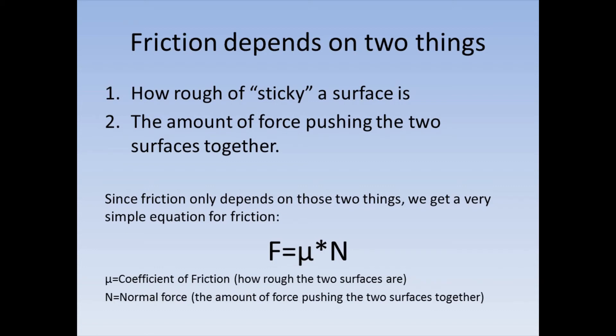The force of friction is equal to this Greek letter called mu times N. Where this little U shape, called mu, is called the coefficient of friction. That is just a number that represents how rough two surfaces are. And then N is the normal force. That's how much the two surfaces are pushing against each other.